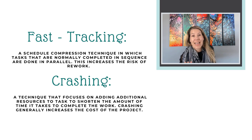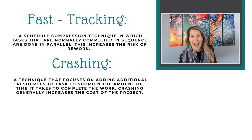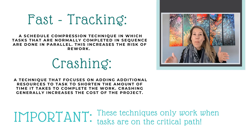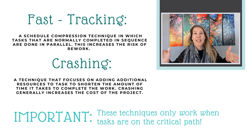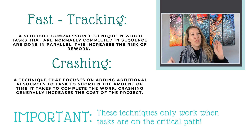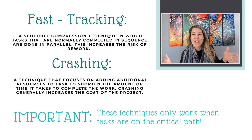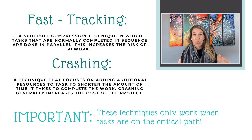Regardless of which of these techniques you're using, it's really important that you know your critical path. The critical path — there's a whole video on it if you haven't watched it — makes up the overall start date and end date of our project and shows the sequence of work to be done. If you start fast-tracking or crashing tasks that are not on the critical path, your project is not going to end any sooner than it's currently scheduled to. So we need to know our critical path to be really strategic about fast-tracking and crashing.